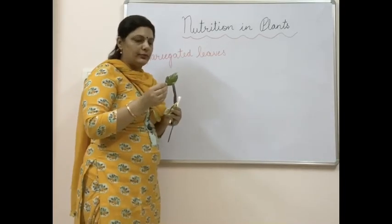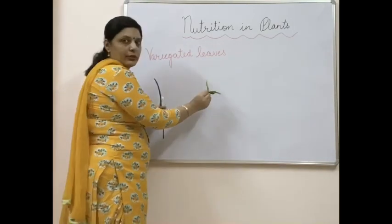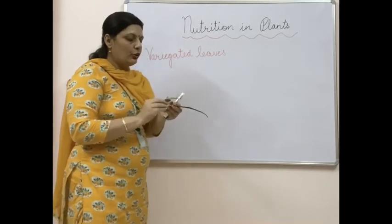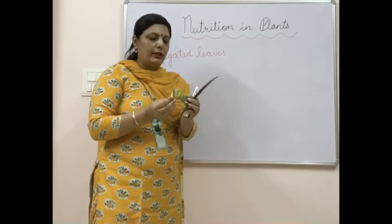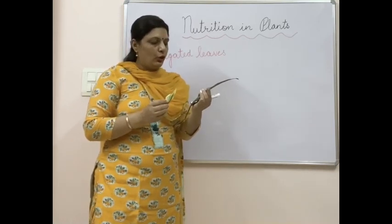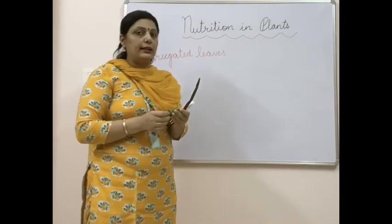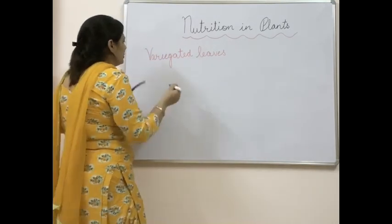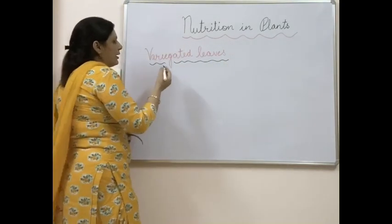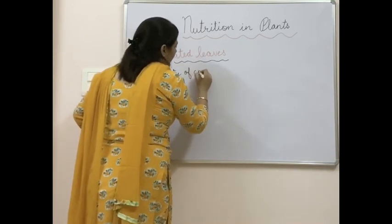Here I am showing you certain leaves that are differently colored. All these leaves have different colors — they are not totally green. This means there is something present in these leaves which is not chlorophyll, because chlorophyll gives green color. So what are these leaves called? They are called variegated leaves. Variegated means variety, and these leaves have a variety of colors, so a leaf with a variety of colors is called a variegated leaf.